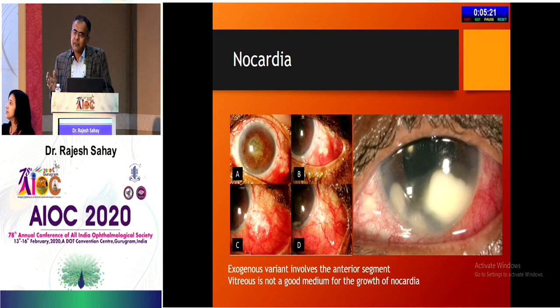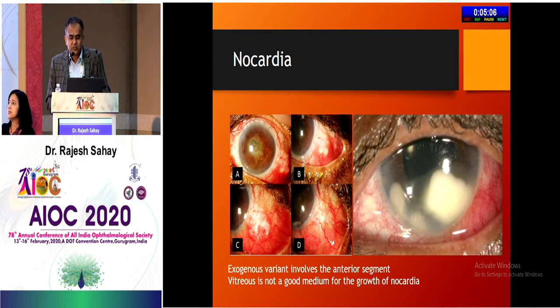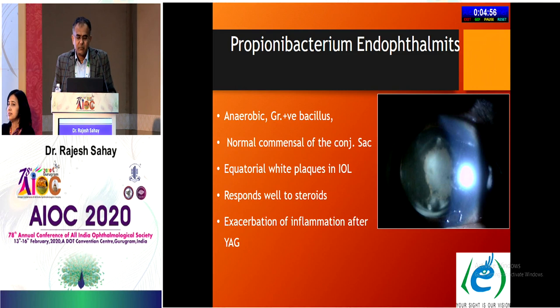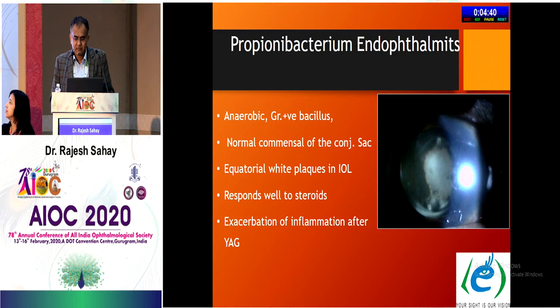Data from Aravind Eye Hospital found nocardia was very common in their endophthalmitis cases. The barefoot habit prevalent in south India was identified as a reason for nocardia infections. In nocardia endophthalmitis, the exogenous variant involves the anterior segment so vitreous taps often yield negative cultures. P. acnes is an anaerobic gram-positive bacillus and normal commensal of the conjunctival sac; equatorial white plaques are seen on the IOL and inflammation responds well to steroids initially.